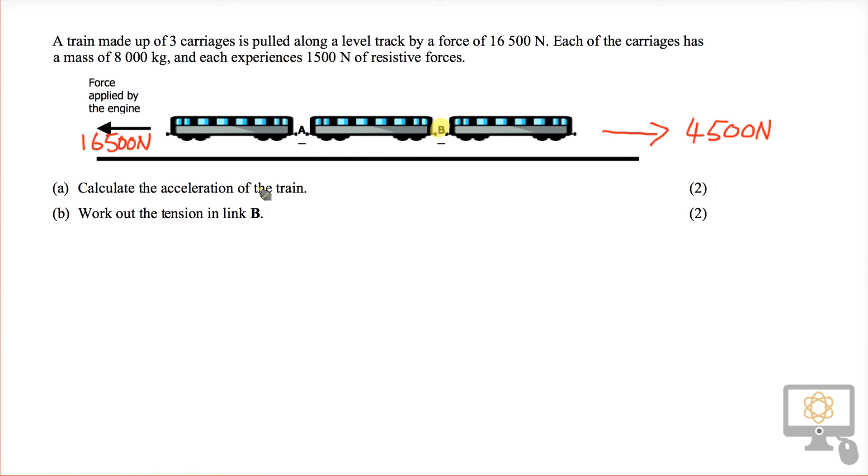First of all, the acceleration of the train. We must treat the train as a whole as one system where there are two forces: an engine force of 16,500 and a frictional force of 4,500 as we've already discussed.